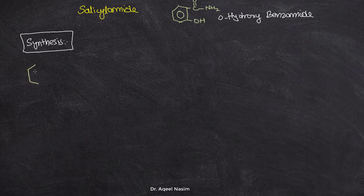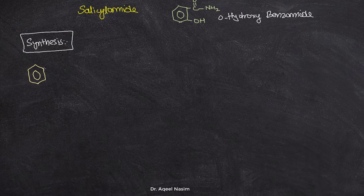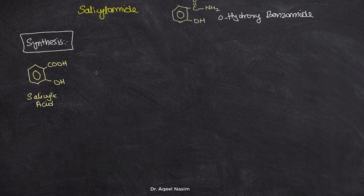As usual, the starting compound for the synthesis of salicylamide is salicylic acid. In most of the acetyl salicylic acid derivatives, the starting compound is salicylic acid, so it's easy to remember for the synthesis of salicylamide.